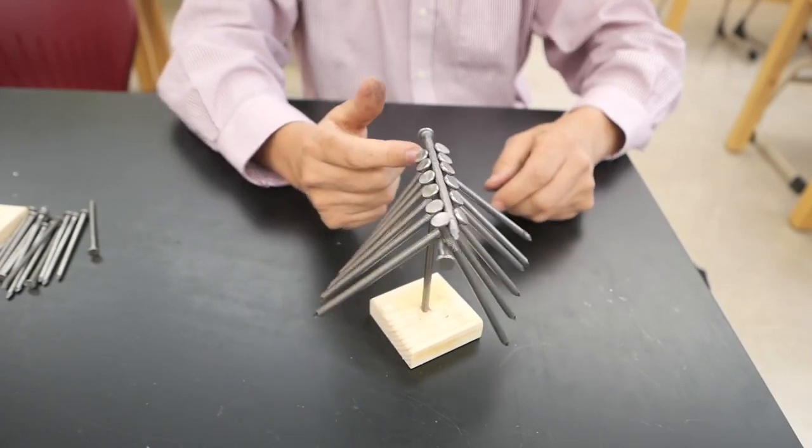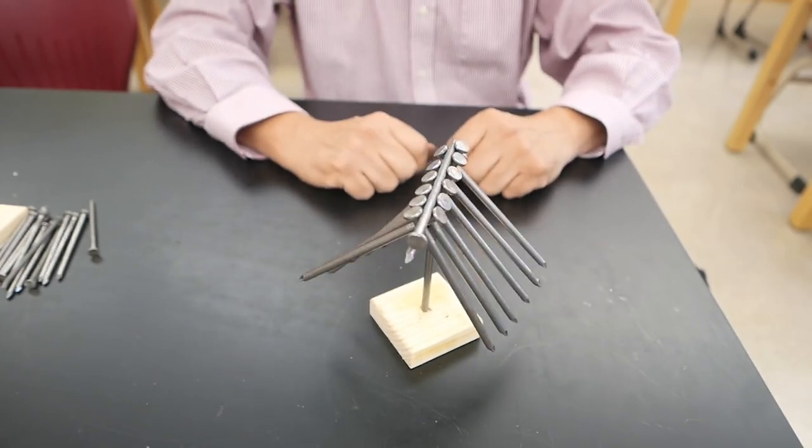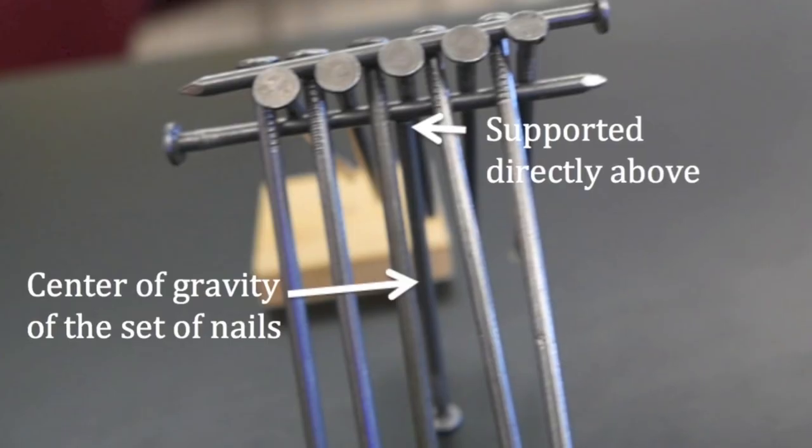Now, why does it balance? Well, the center of gravity is somewhere in the middle of the pack of nails, and the support is directly above that position.